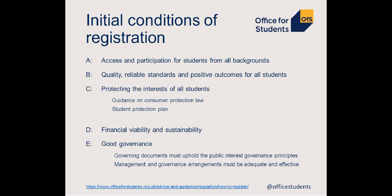This section of the webinar will look at the initial conditions of registration that you will need to meet. For those who've read the regulatory framework, you'll know there are a large number of ongoing conditions; these do not need to be met at the point of registration. The initial conditions are organised into five categories: access and participation, quality and standards, student protection, financial viability and sustainability, and good governance. We won't have time to go through every condition in detail here, but if you need further information you can read about every condition in the regulatory framework on our website.